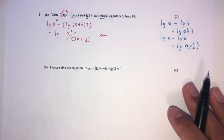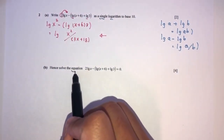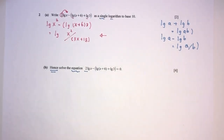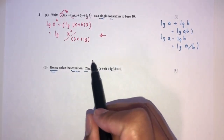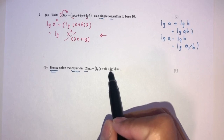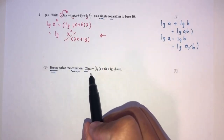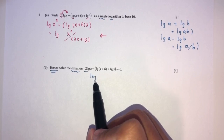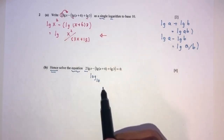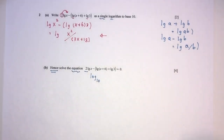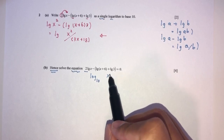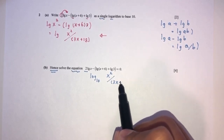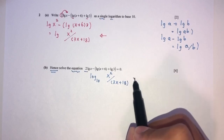For part b, we have to solve the equation — 'hence' means we use part a. We've just seen the expression transform into log base 10 of (x squared over (3x plus 18)) equals 0.